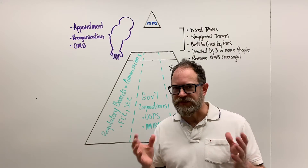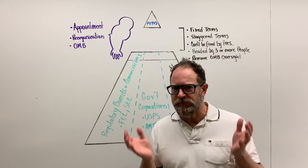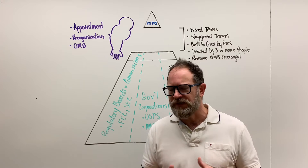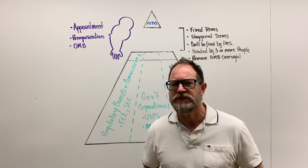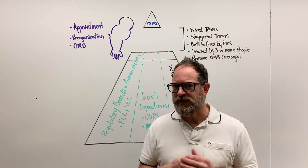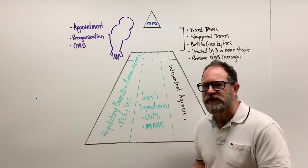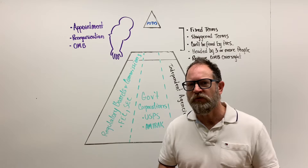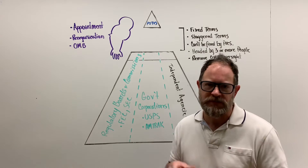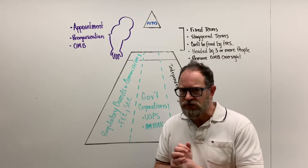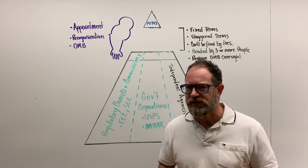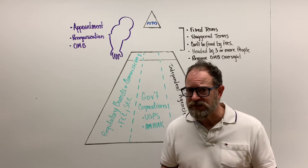Here we are again with the pyramid of executive power, with POTUS sitting at the pinnacle. This is the backside of the pyramid, and it operates a little differently. The gap you see is there because the entities on this face of the pyramid are specifically placed here to be free from executive control - free from presidential controls. The gap symbolizes the additional structures put in place so that the president doesn't have as much control, allowing this part to operate independently of the president's wishes.